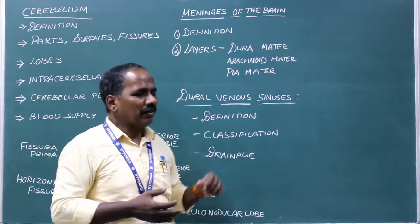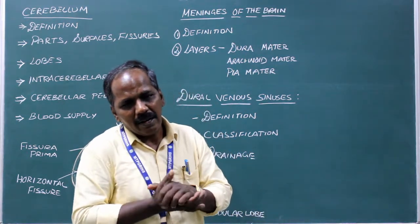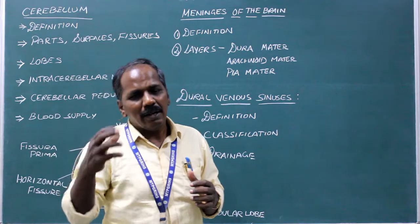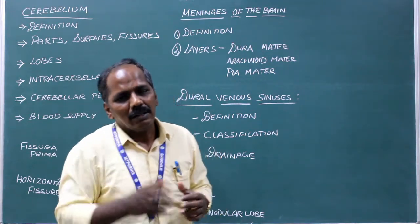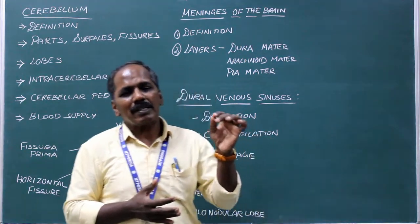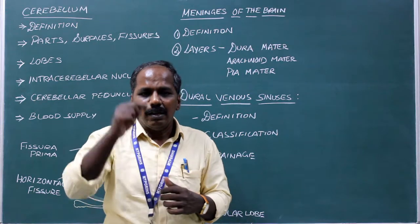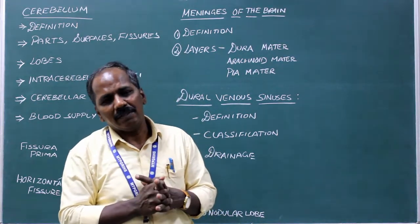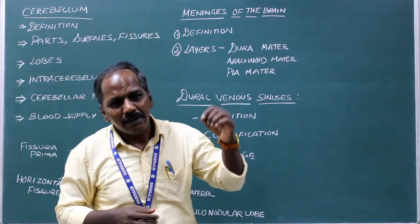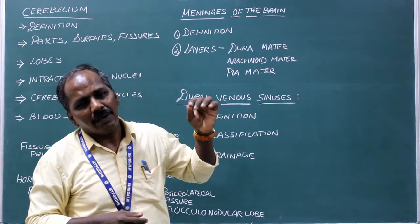What is the importance of dural venous sinuses? The veins of the brain, which drain the deoxygenated blood from the brain, drain into the dural venous sinuses. The dural venous sinuses are connected to the superficial veins present in the scalp by emissary veins. Therefore, infections from the superficial veins can enter into the brain through the emissary veins and dural venous sinuses and may cause intracranial infections.